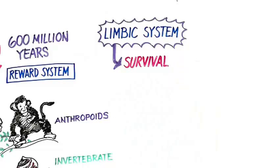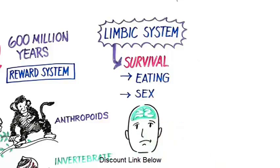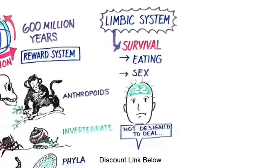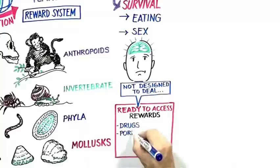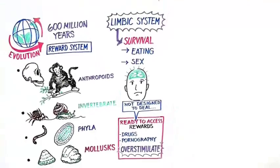Our ancient ancestors were able to survive because they were rewarded through their behaviors such as eating and sex. But today, our brains aren't designed to deal with these ready-to-access rewards. Drugs, pornography, and other addictions over-stimulate this reward system.